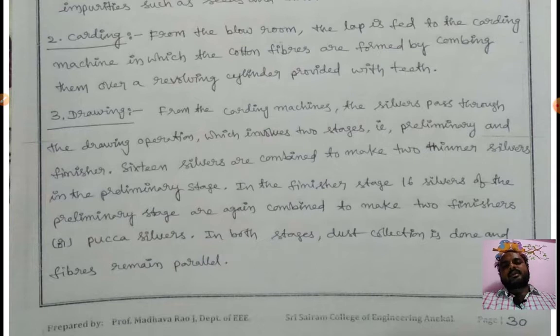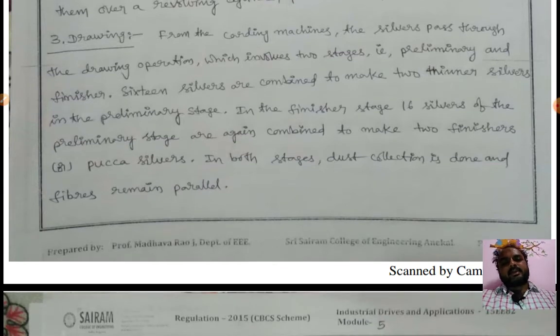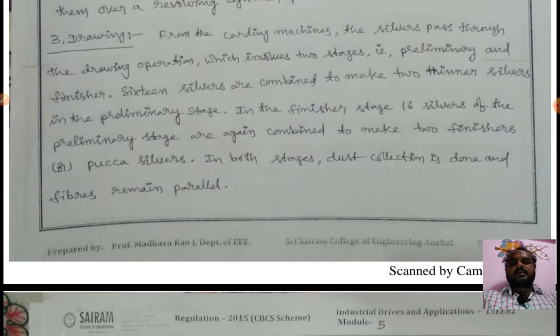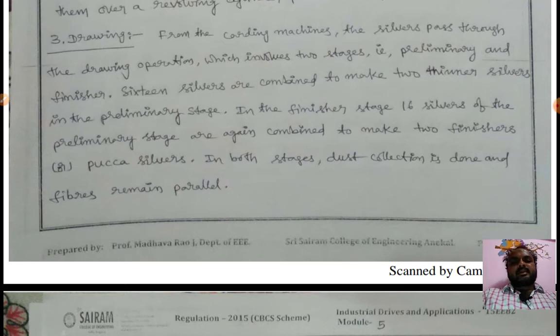Drawing: From the carding machines, the slivers pass through the drawing operation which involves two stages—preliminary and finisher. 16 slivers are combined to make two thinner finishers in the preliminary stage. In the finisher stage, 16 slivers are again combined to make two finishers.